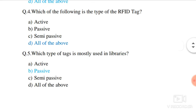Question number 5. Which type of tag is mostly used in libraries? Active, passive, and semi-passive are the types of RFID tags. The correct answer is: passive tag is most used in the library.